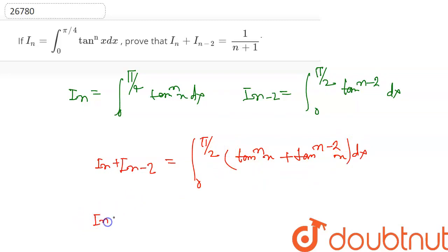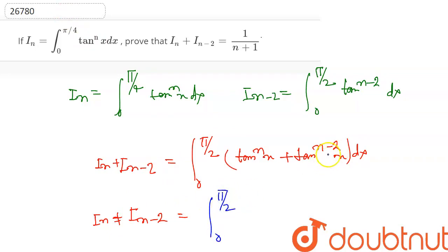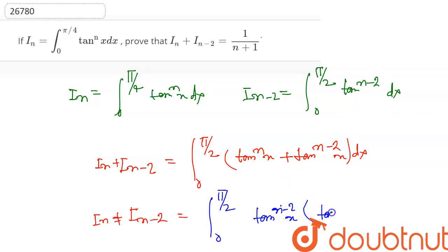So In + In-2 = ∫₀^(π/4) tan^(n-2)x · (tan²x + 1) dx.